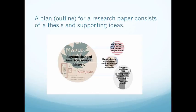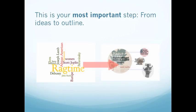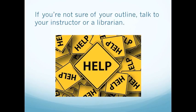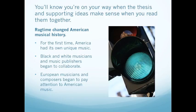A plan, or outline, for a research paper consists of a thesis and supporting ideas. This is your most important step from ideas to outline. If you're not sure of your outline, talk to your instructor or a librarian. You'll know you're on your way when the thesis and supporting ideas make sense when you read them together.